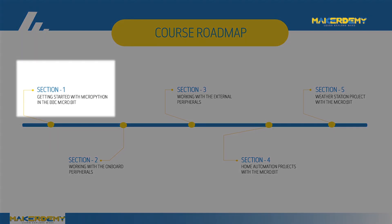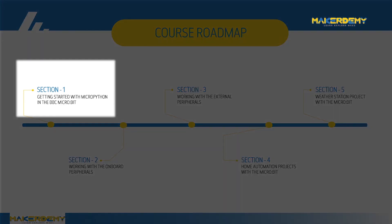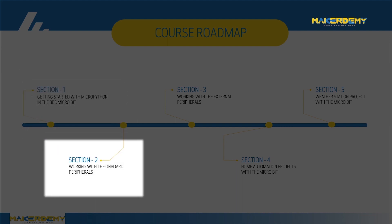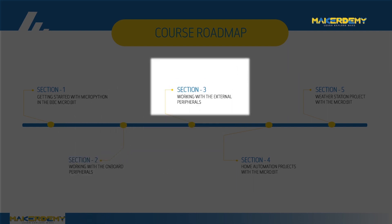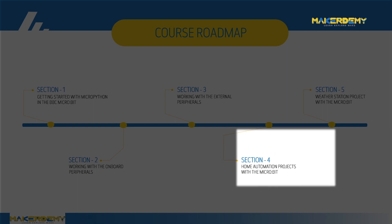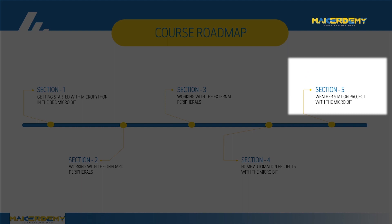We will first get started with MicroPython programming using the Mu editor. Next we will work with all the onboard input and output devices. After that we will interface external peripherals like LEDs, sensors and speaker. Then we will create home automation projects with relay, motion detector and radio communication. Finally we will make a weather station with a 16x2 LCD and BMP180 temperature and pressure sensor.